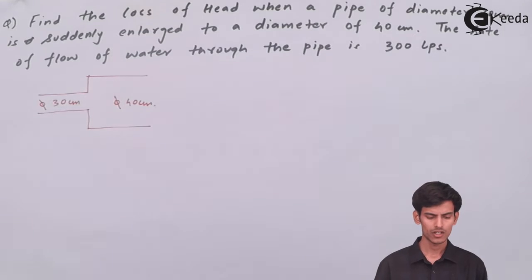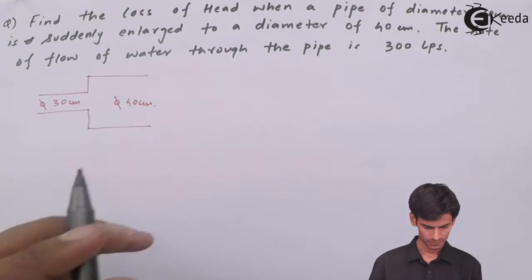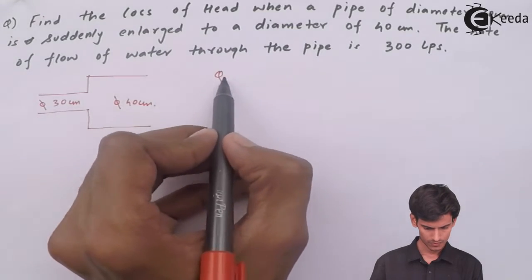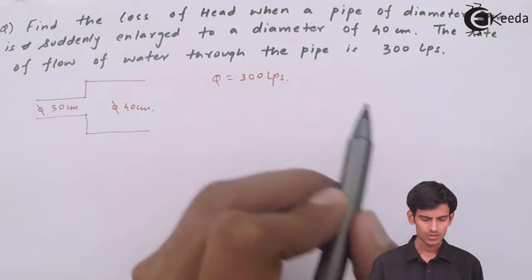The diameter is 30 and 40 centimeters. You need to know the value of the velocities in both pipes. So first let's calculate the velocity using the continuity equation Q = AV.